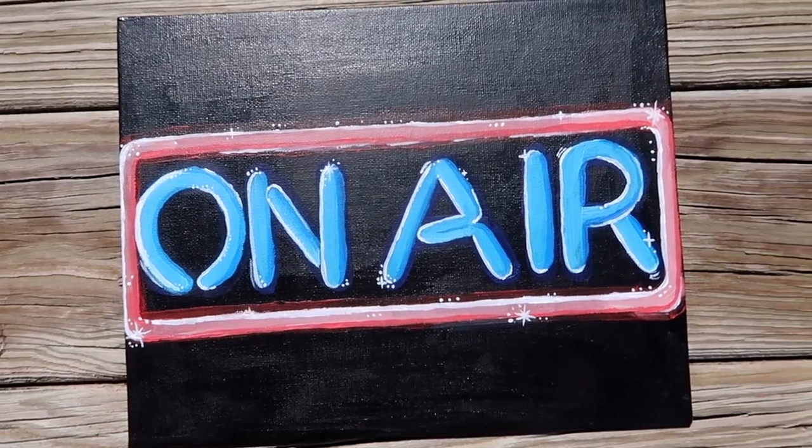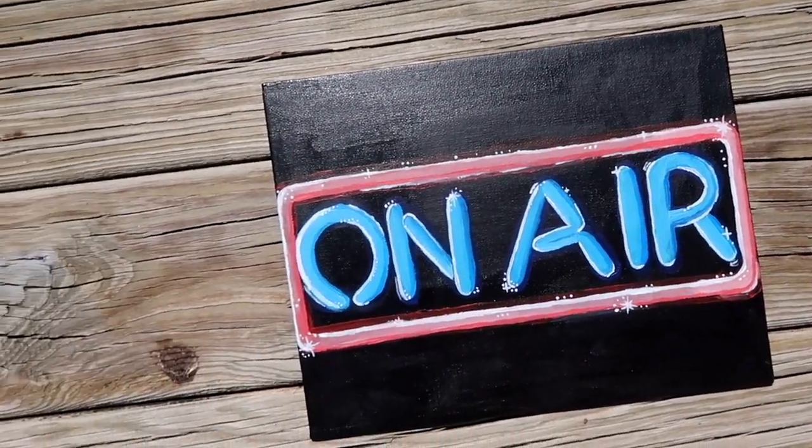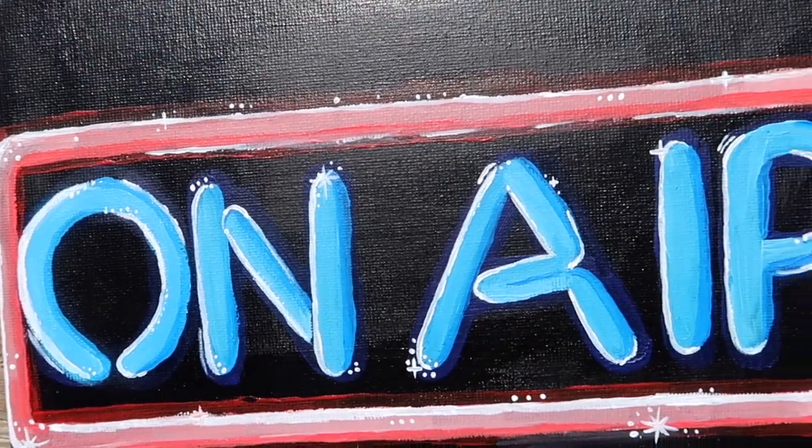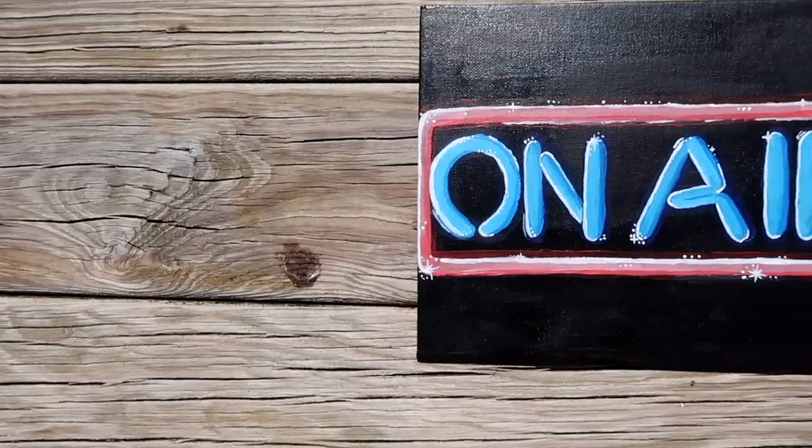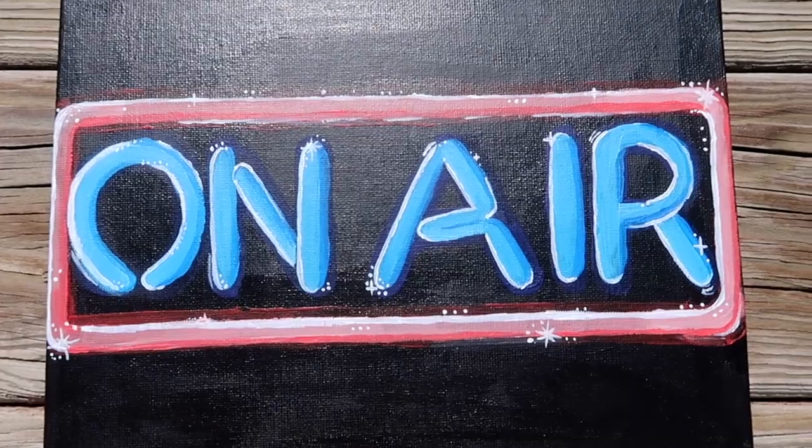And here's how my finished neon sign turned out. It might look cool if you painted over the sign with glow-in-the-dark paint. Or you could add some LED strips to the edge of your canvas. Let me know what kind of neon sign you'd paint down below. And if you end up making one, make sure to tag me on Instagram.